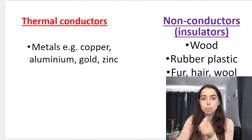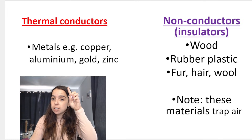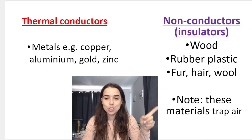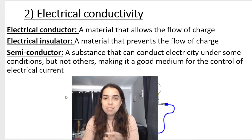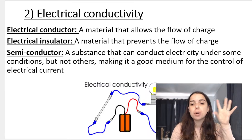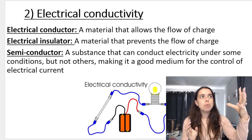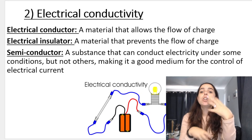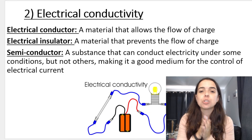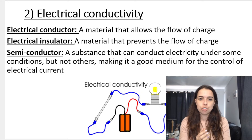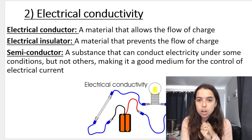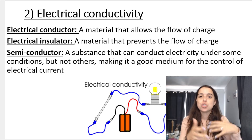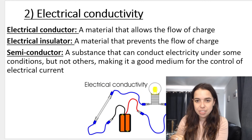Here are some examples of thermal conductors — metals are good thermal conductors. Non-conductors or insulators do not allow heat to pass through; there are some examples for you to learn and know. Then we've got electrical conductivity. Thermal was about allowing heat to pass through; electrical is about allowing the flow of charge or electricity to pass through. An electrical conductor allows the flow of charge; an electrical insulator does not. You also get semi-conductors, which under some circumstances allow charge to flow through, but not under others.